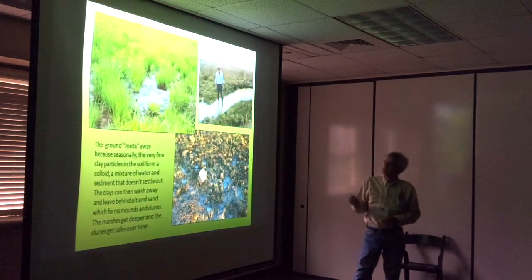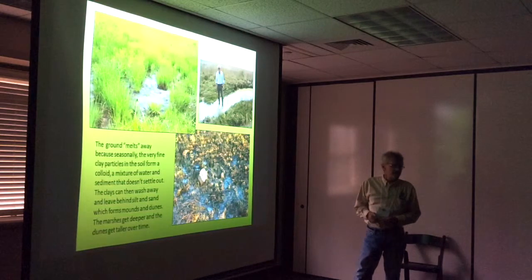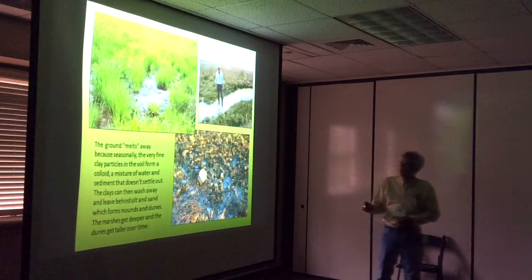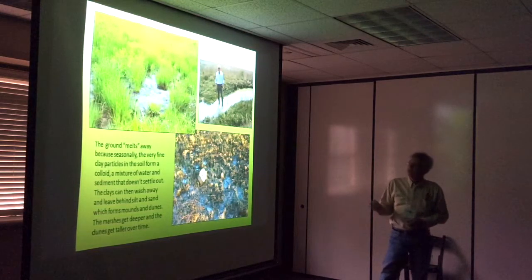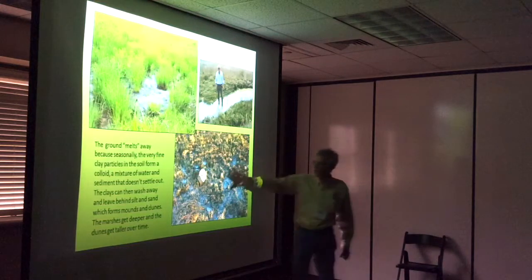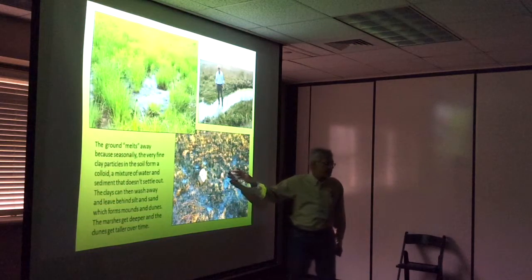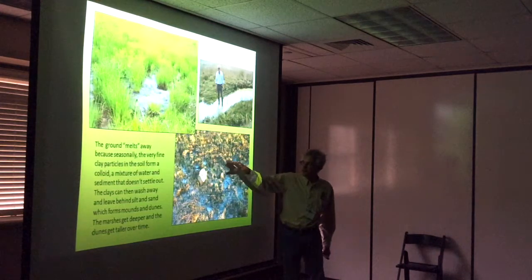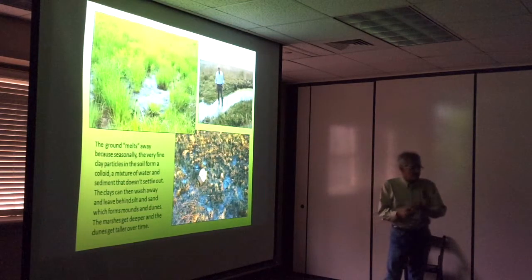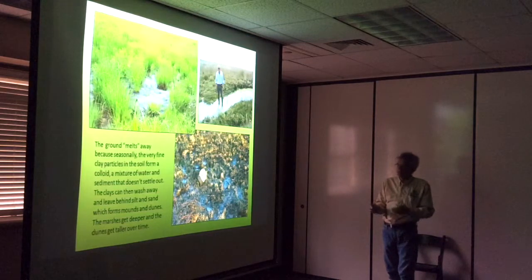This is what it looks like happening in real time. Here you have a little marsh area on an upland flat — notice how muddy that water is in winter. Those clays have disassociated from the other soil particles, sitting in the water as a colloid. It rains enough to run off and form these little swales. Here's a close-up of what it looks like when it dries out — the ground almost looks dissolved or melted away. That's those clays running off and leaving behind the sands and silts.